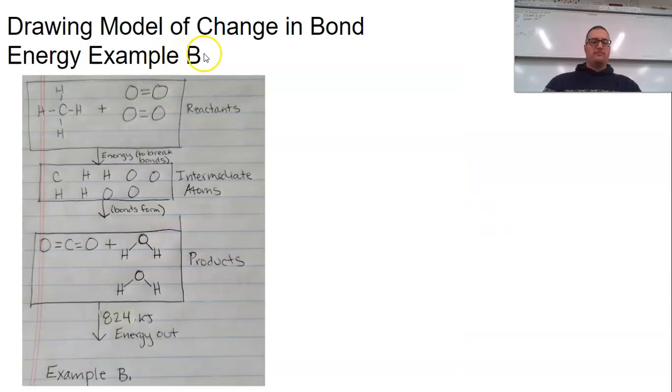Again, another example that we have. We have our reactants where we need to show the bonds and the appropriate amounts. Energy is needed to break the bonds. So we have intermediate atoms. See how they're all separated? The bonds form, giving your new bonds that are shown. And energy is left out. So again, we're going from reactants to products with our intermediates in. Shows you kind of exactly what's going on with the bonds as we go.